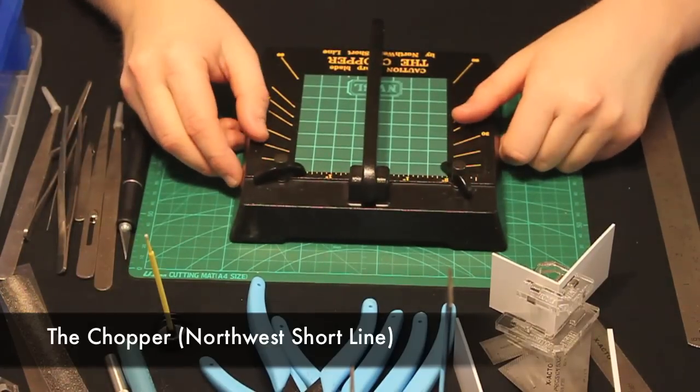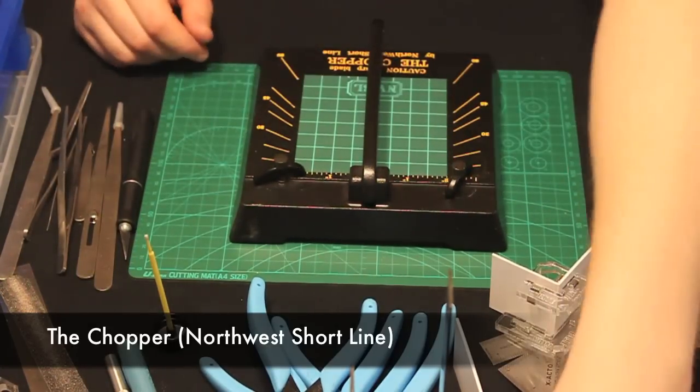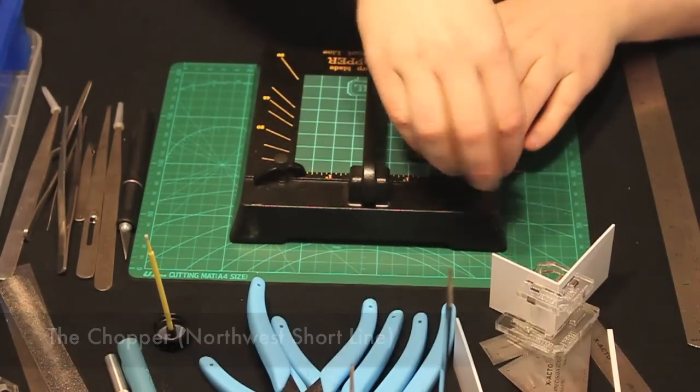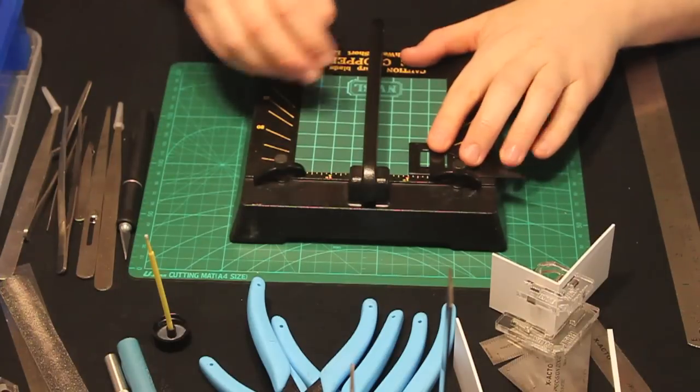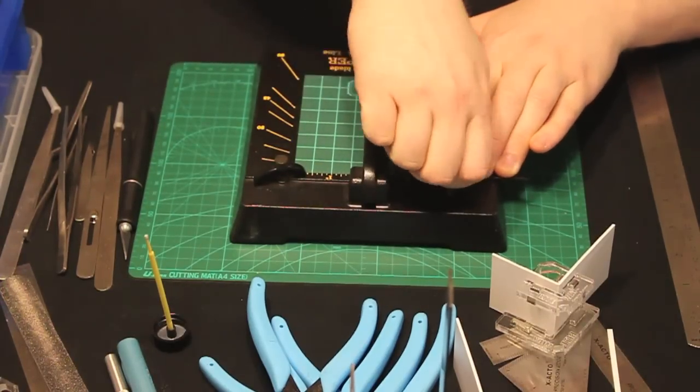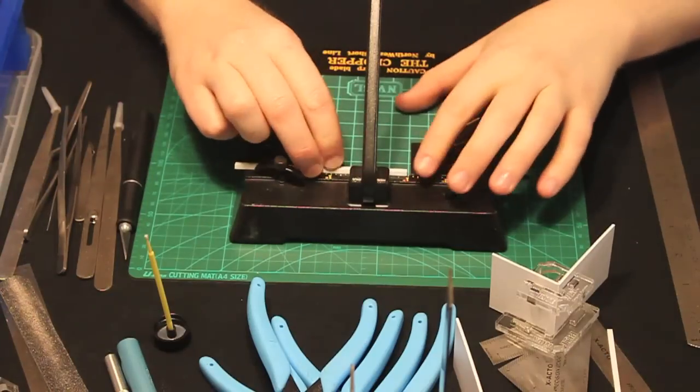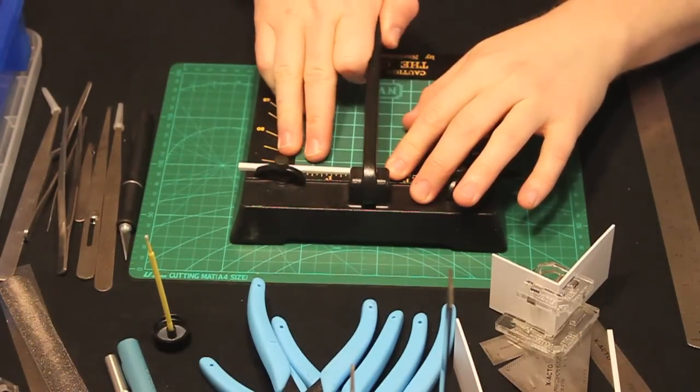This is the Chopper by Northwest Shortline. I use it to make all sorts of straight cuts. It comes with little jigs that will give you a 90 degree angle, 30 degree or 45 degree cut, 60 degree cut, stuff like that. That way you can always get the same exact cut.